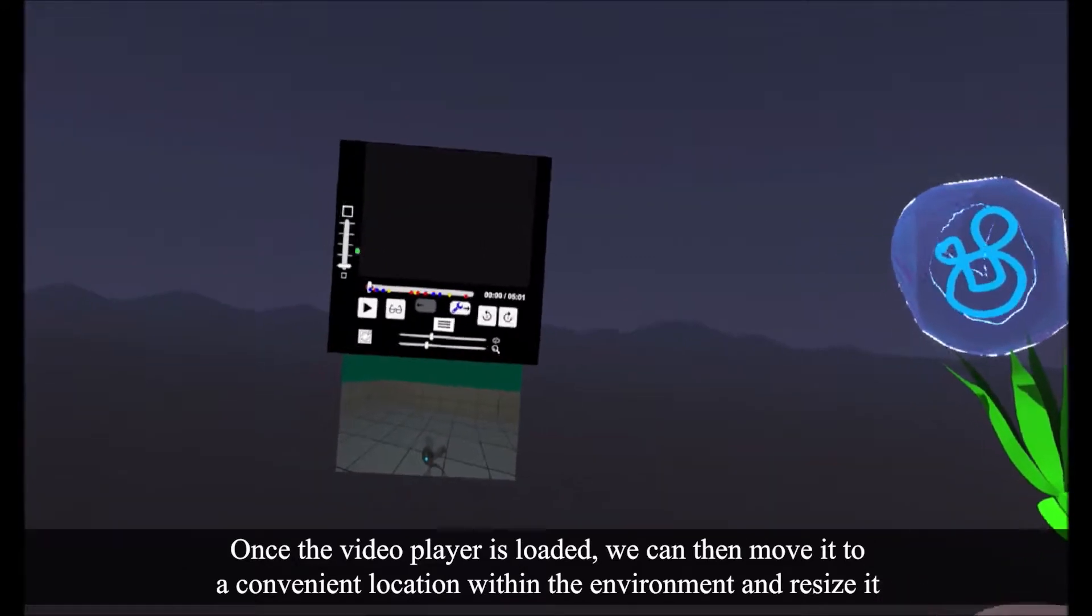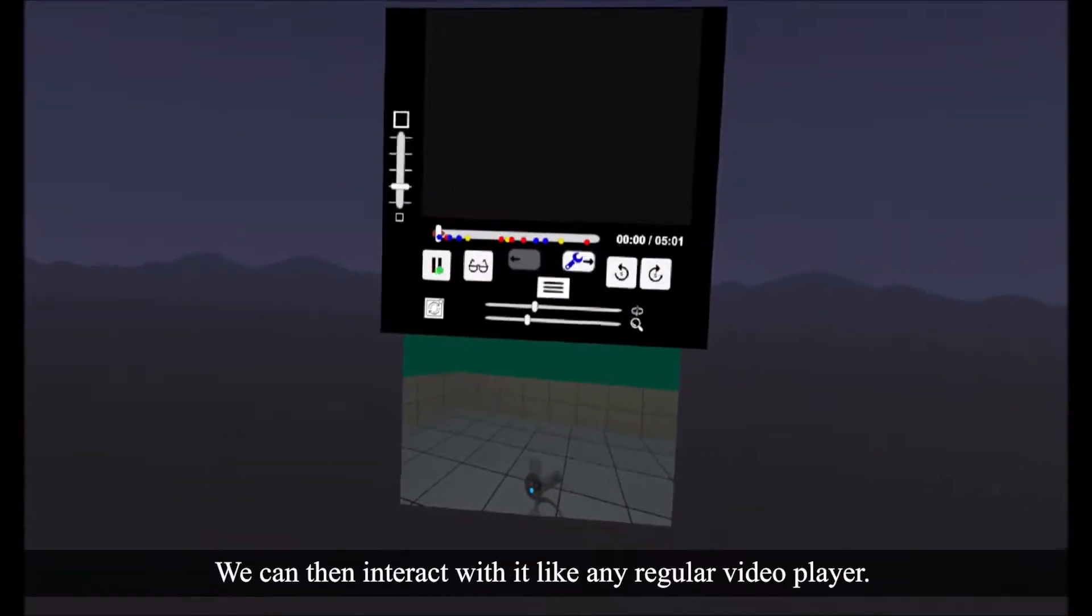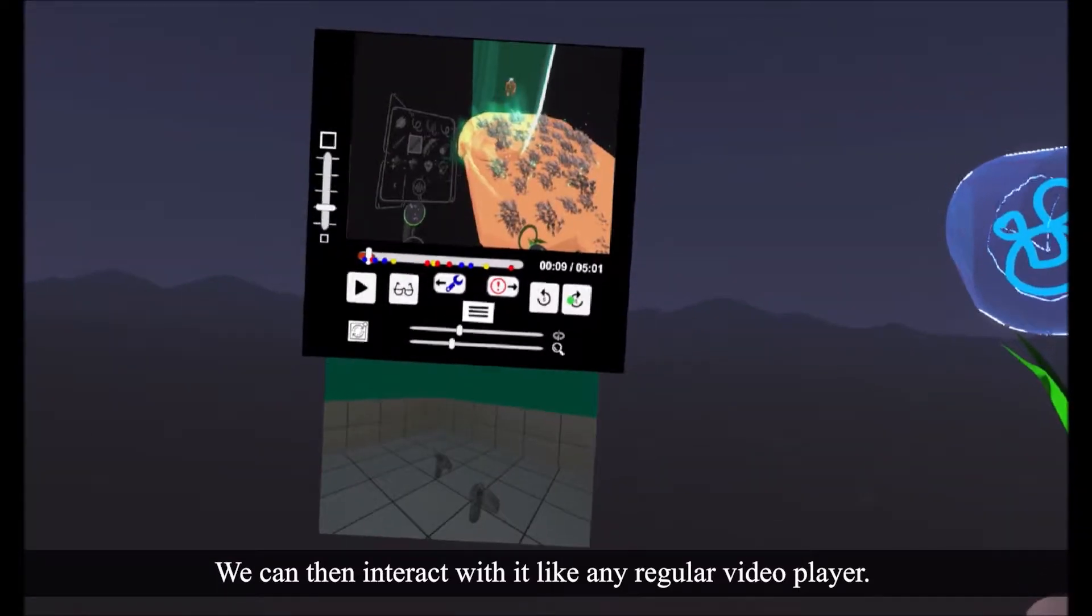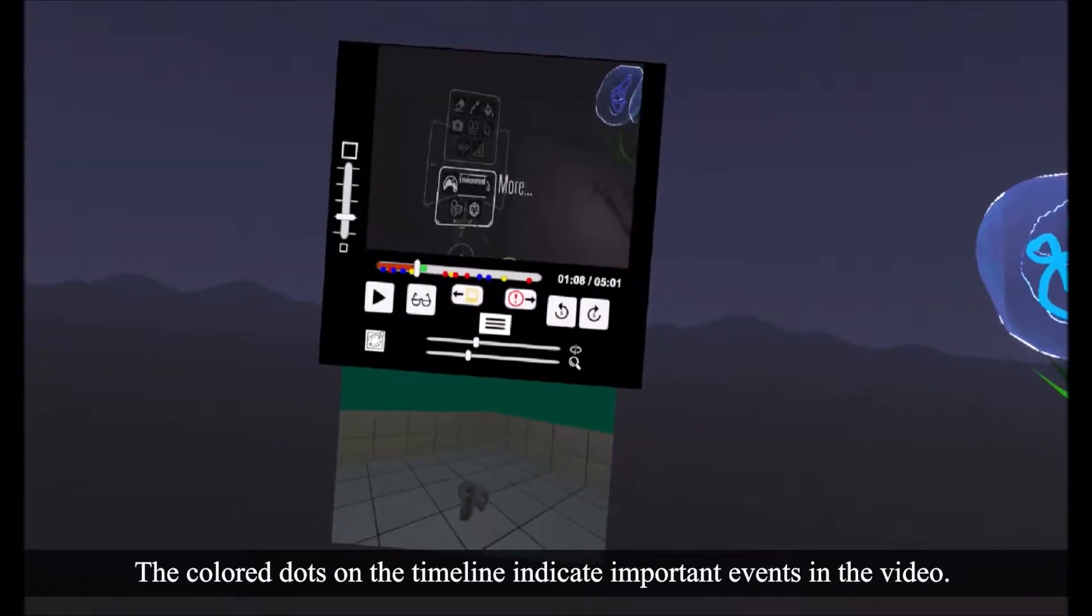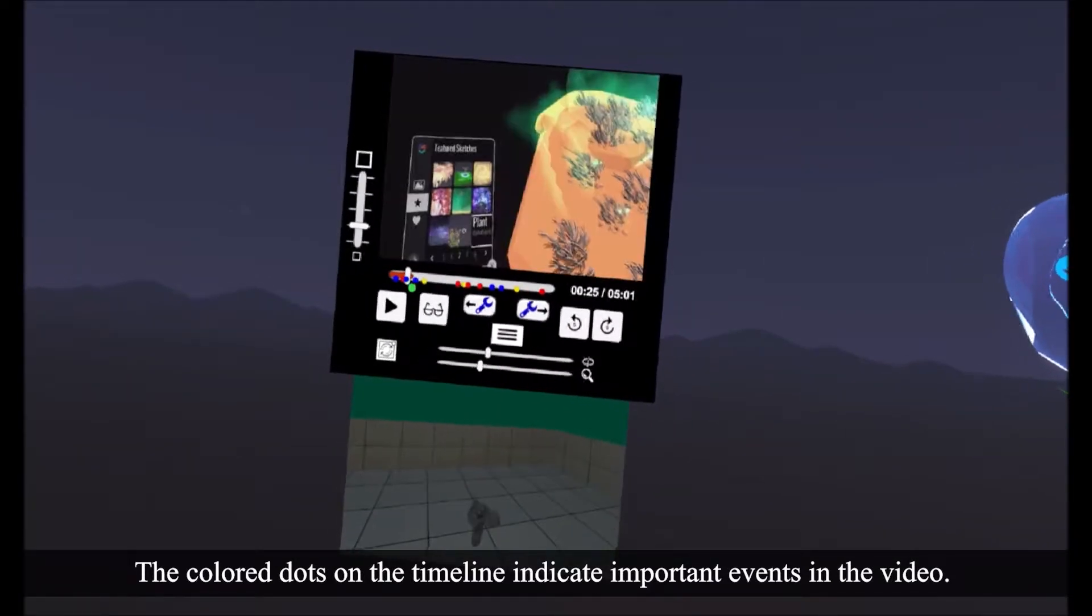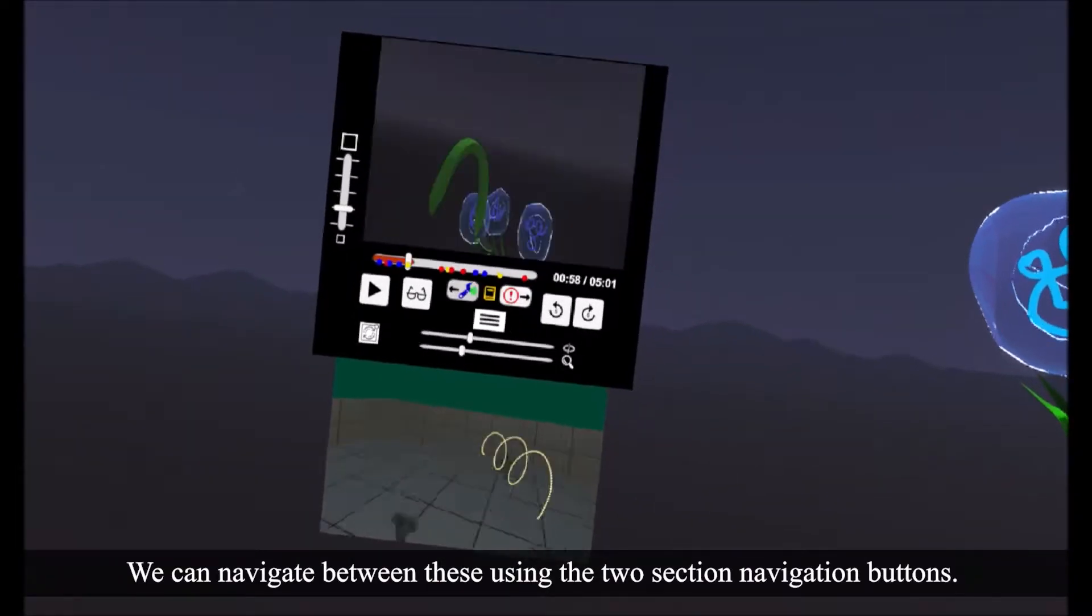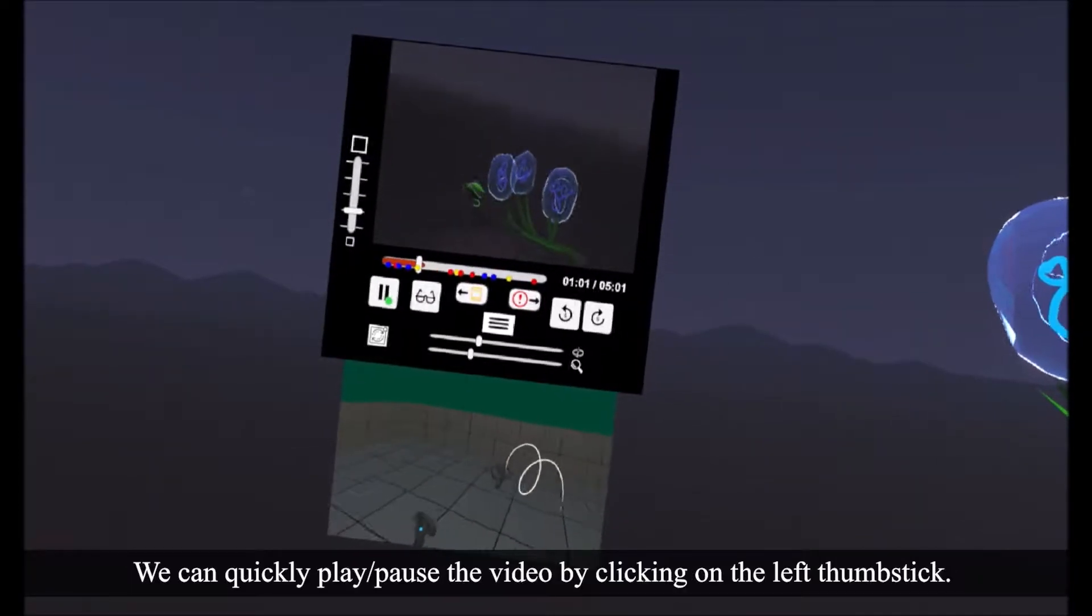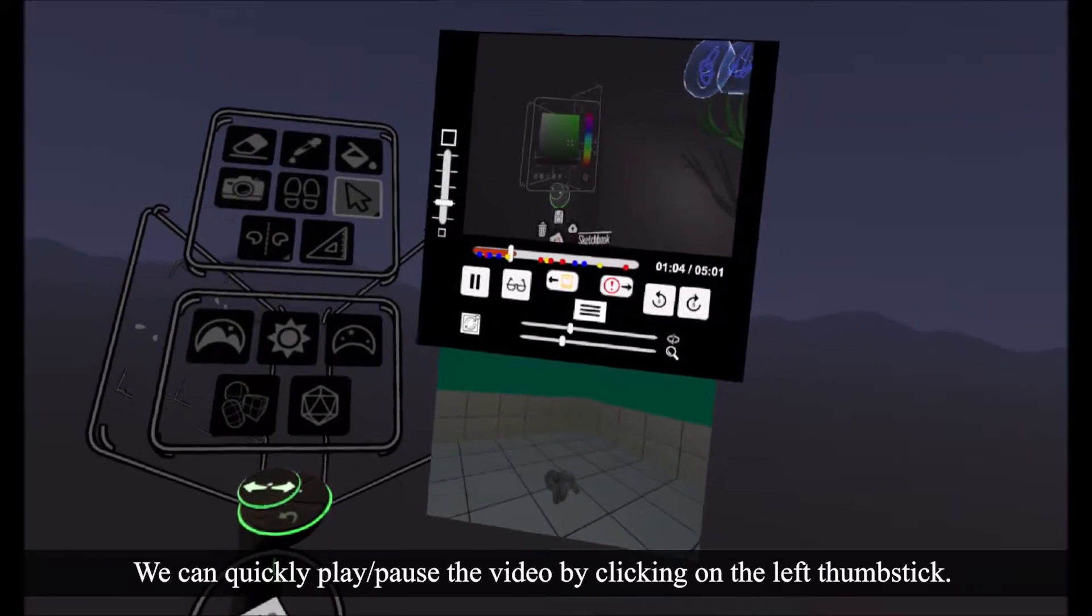Once the video player is loaded, we can then move it to a convenient location within the environment and resize it. We can then interact with it like any regular video player. The colored dots on the timeline indicate important events in the video. We can navigate between these using the two section navigation buttons. We can quickly play or pause the video by clicking on the left thumbstick.